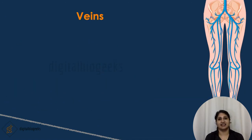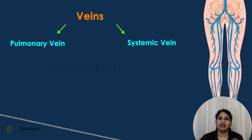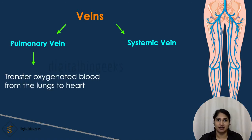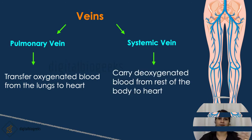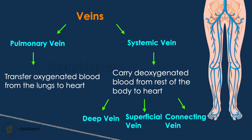Veins are thin-walled vessels that carry deoxygenated blood from the whole body to the heart. There are two types of veins: pulmonary vein and systemic vein. The pulmonary vein carries oxygenated blood from the lungs to the heart — it is the only vein that carries oxygenated blood; all other veins carry deoxygenated blood. Systemic veins can be divided into deep veins, superficial veins, and connecting veins. Deep veins are found in muscles and bones; superficial veins are present in the fatty layer under the skin; and connecting veins connect deep veins to superficial veins, directing blood from superficial to deep veins.